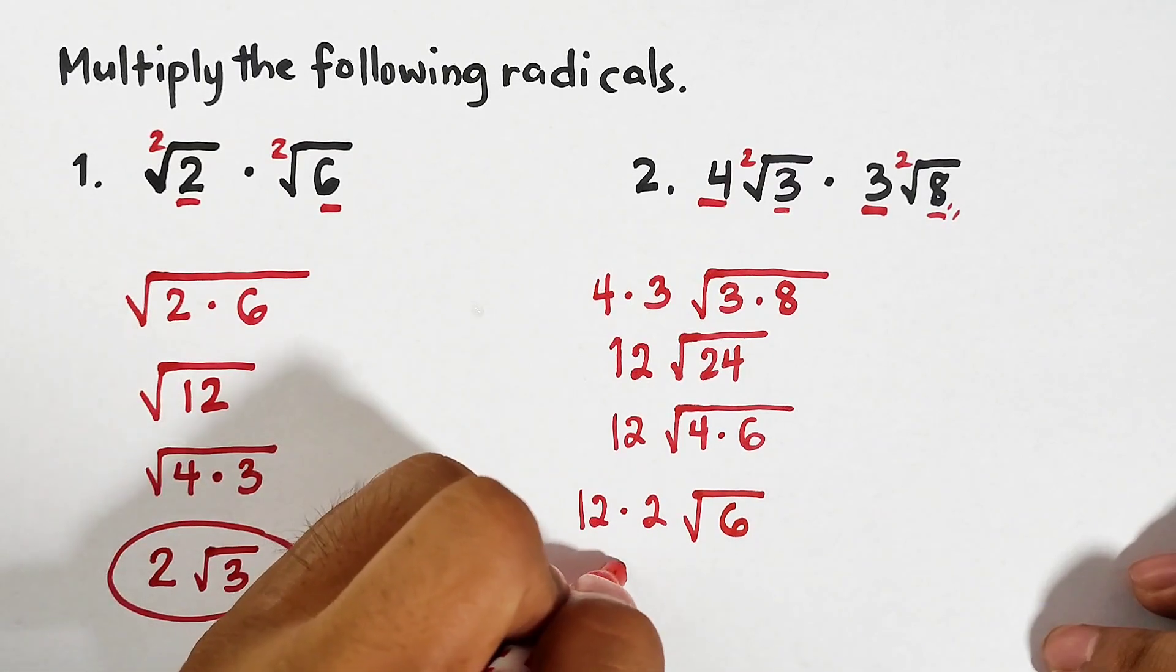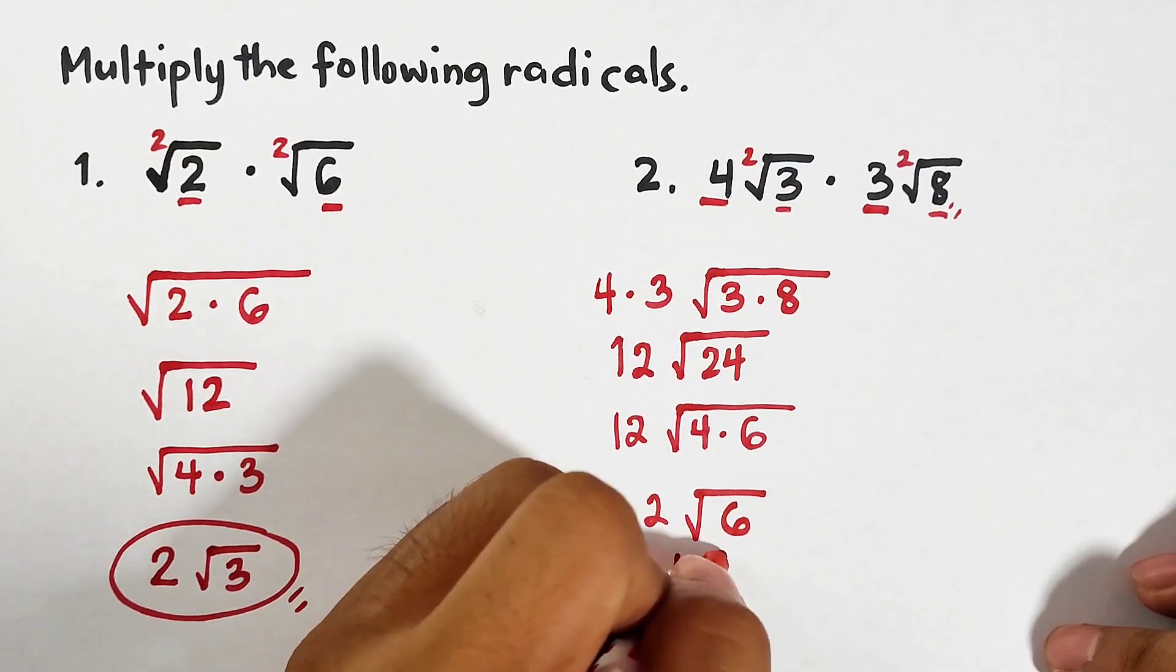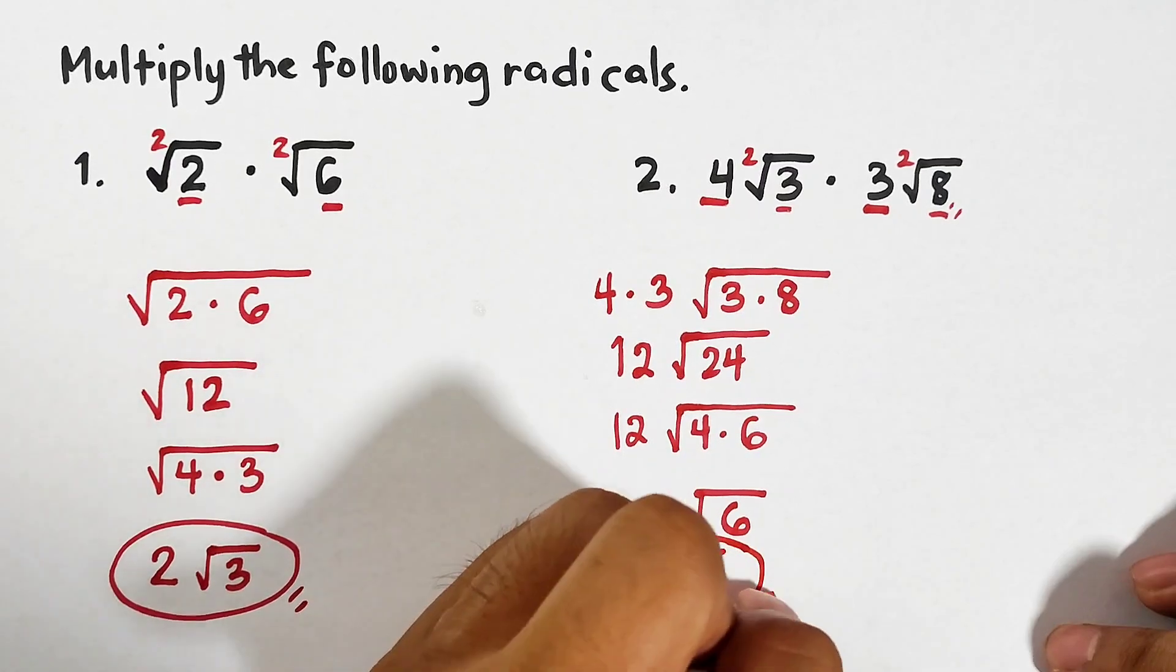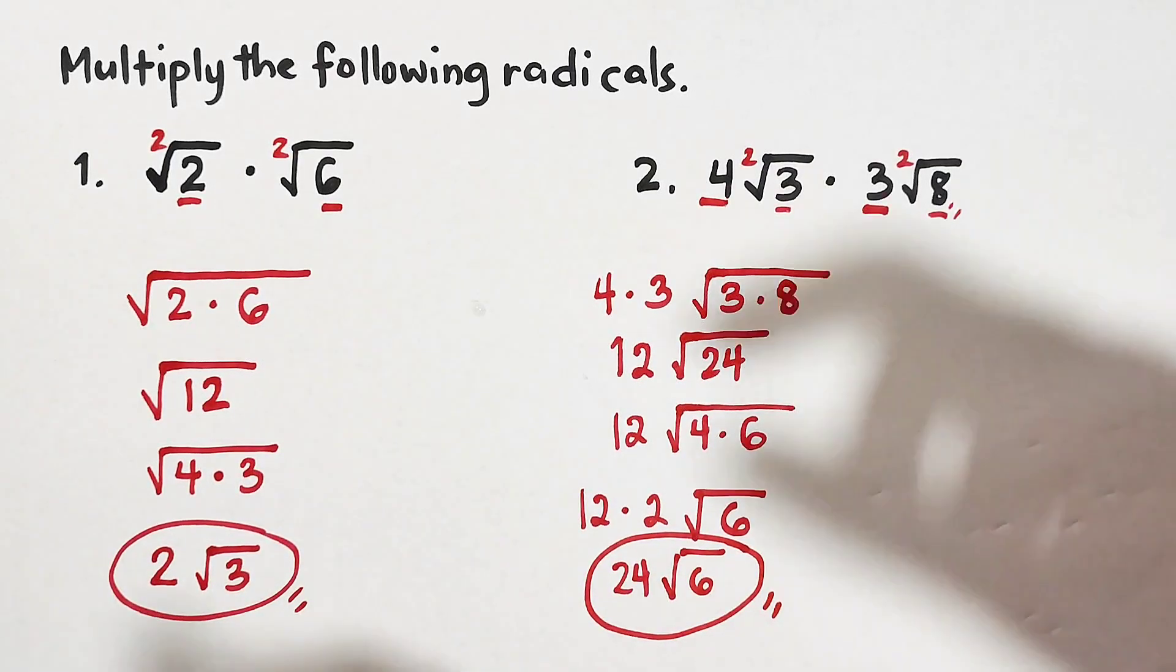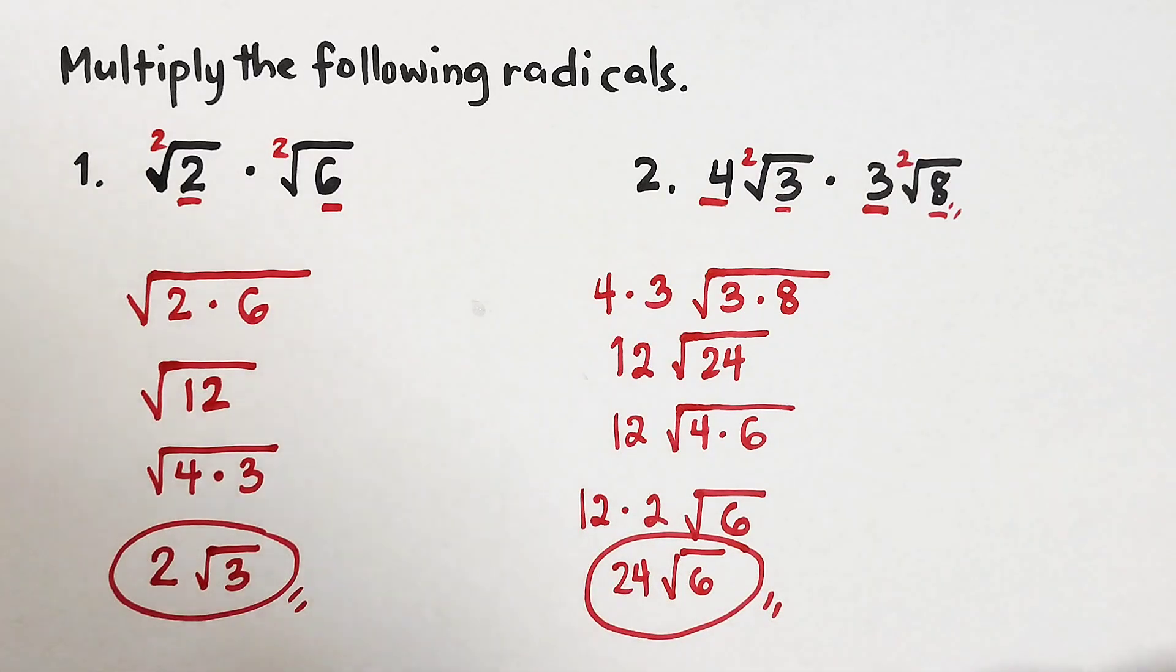Again, this 2 came from the square root of 4. Then copy the square root of 6, and now multiply this. We have 24 and square root of 6, and this is the final answer in number two. So that's it, guys.